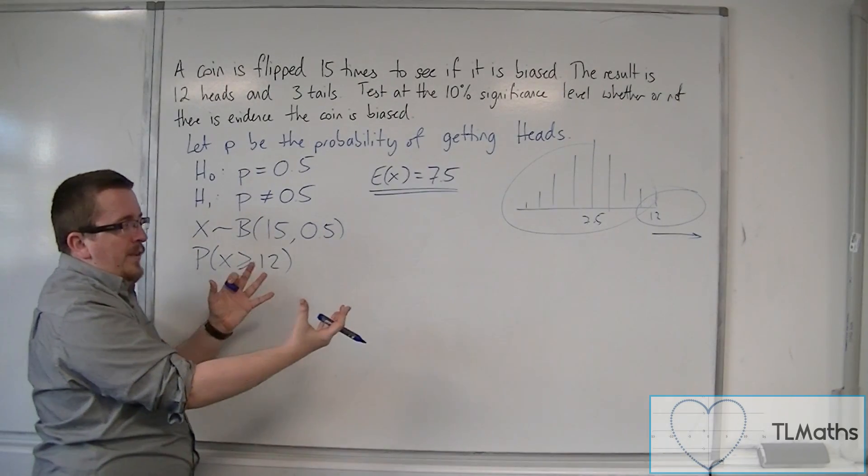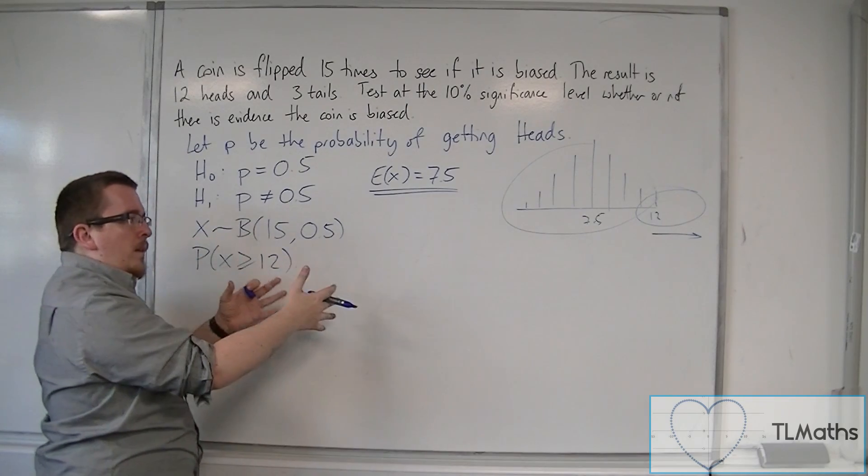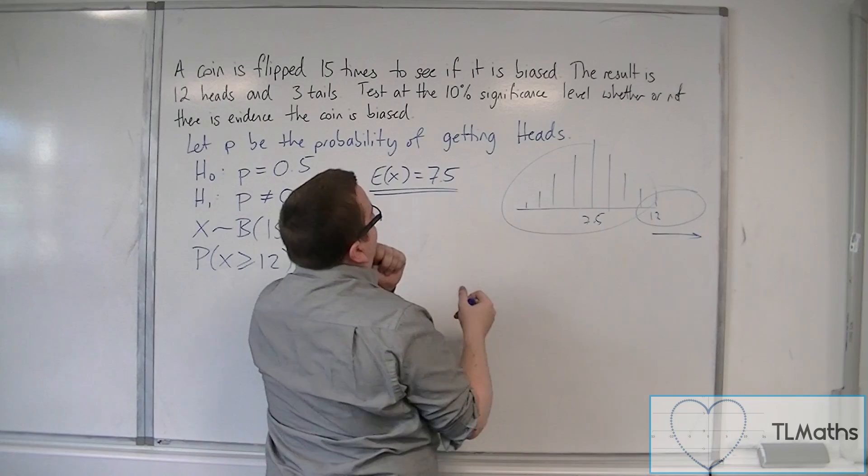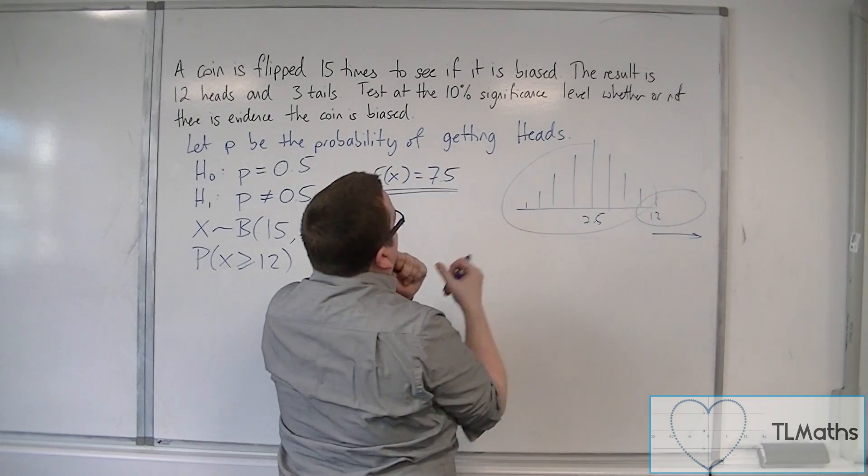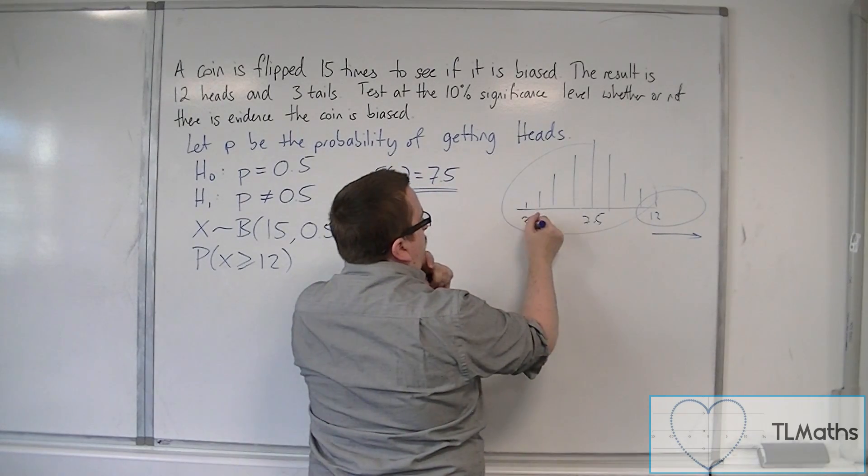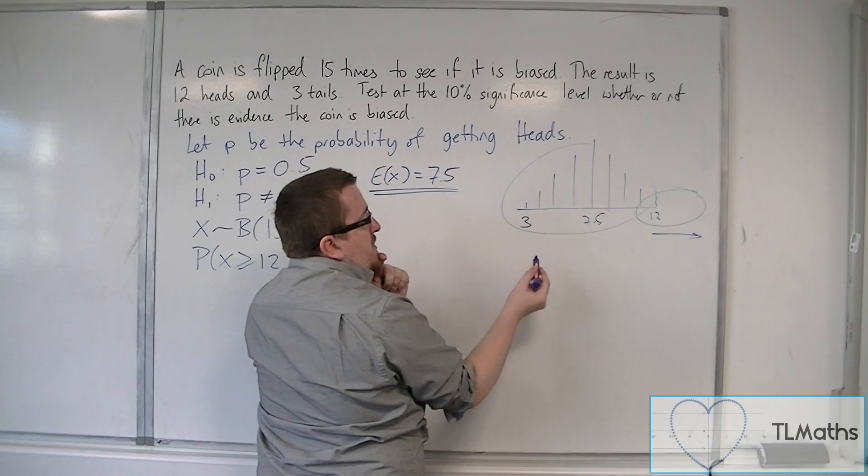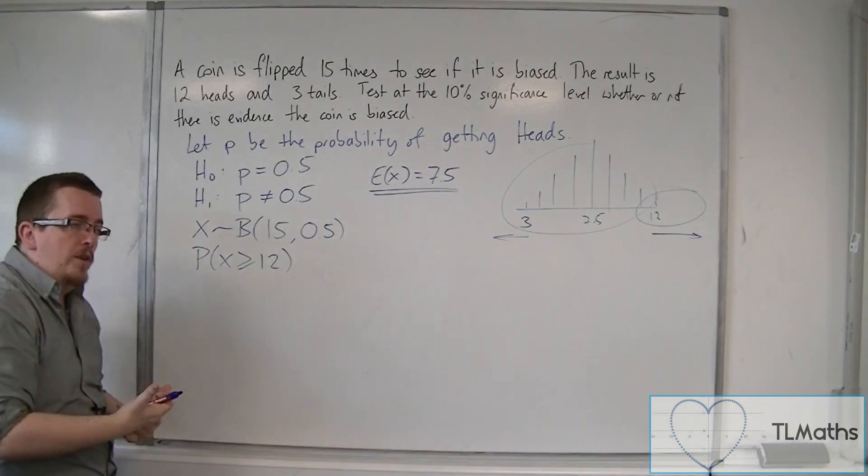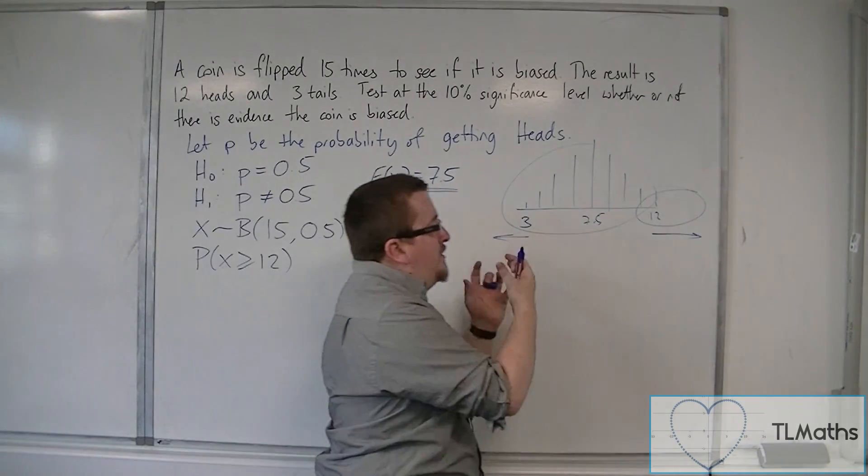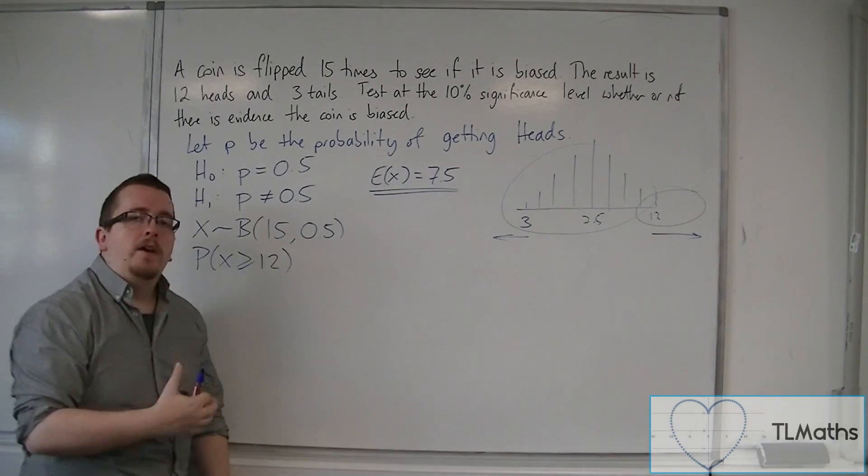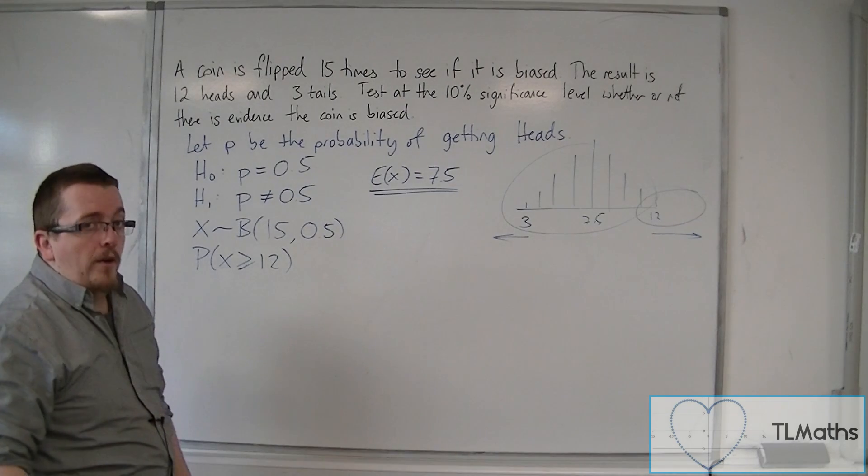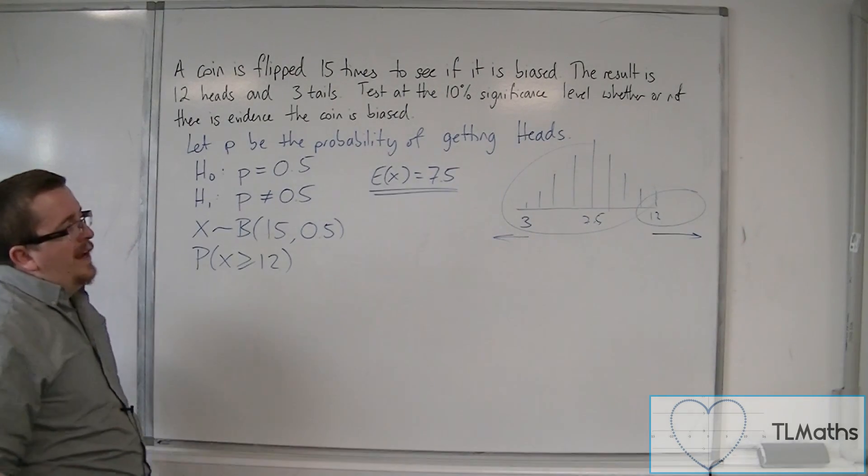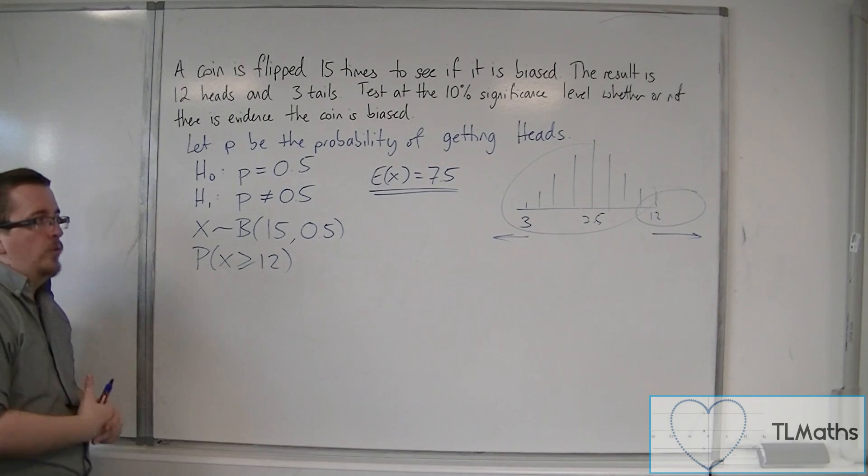I haven't explained that particularly well. If we were looking at, let's say, 3 heads, 3 is to the left of 7.5, so I would use less than or equal to 3 at this point. Because 12 is to the right of the expected value, we use greater than or equal to 12. That's kind of the layman terms of it, of how this would work.